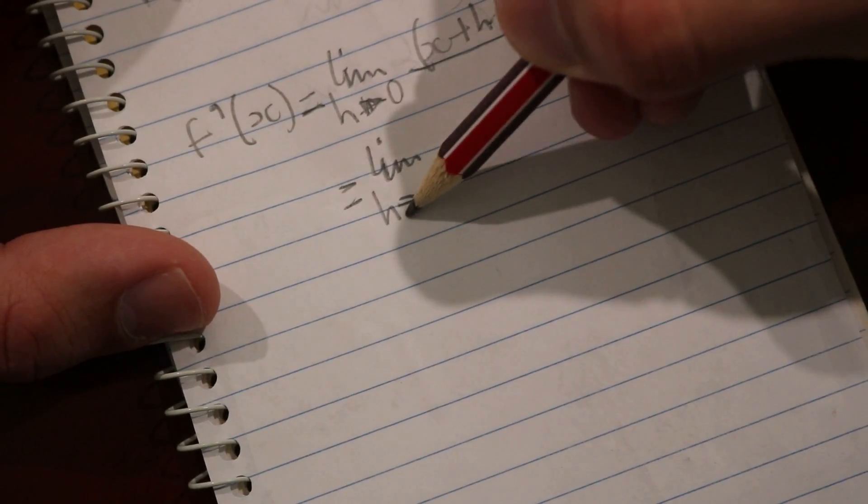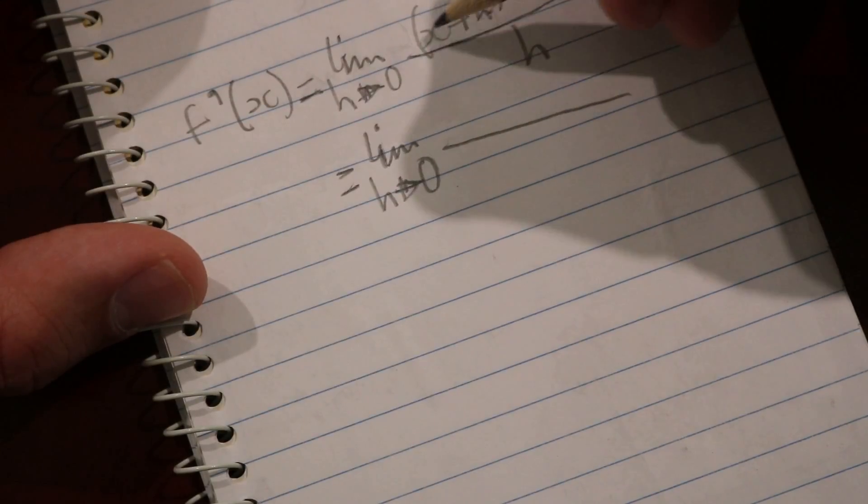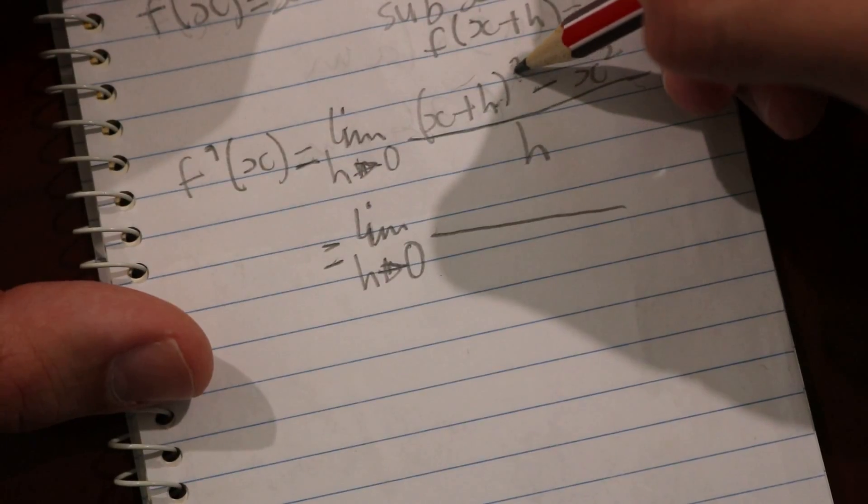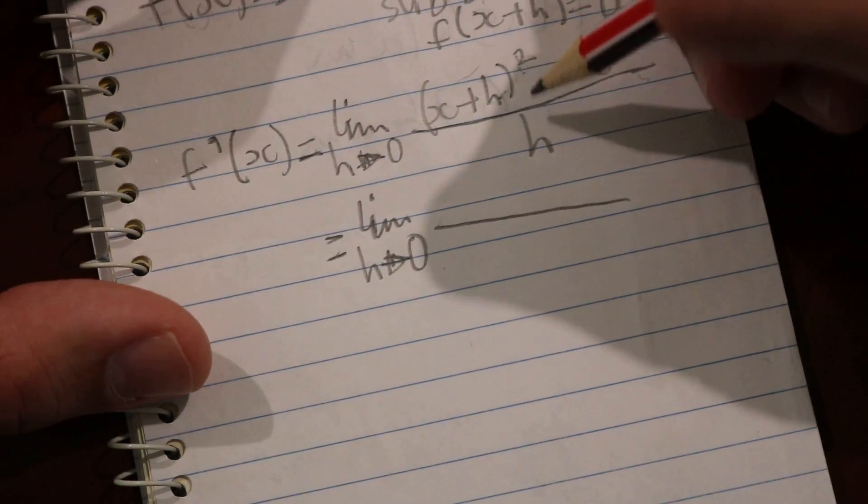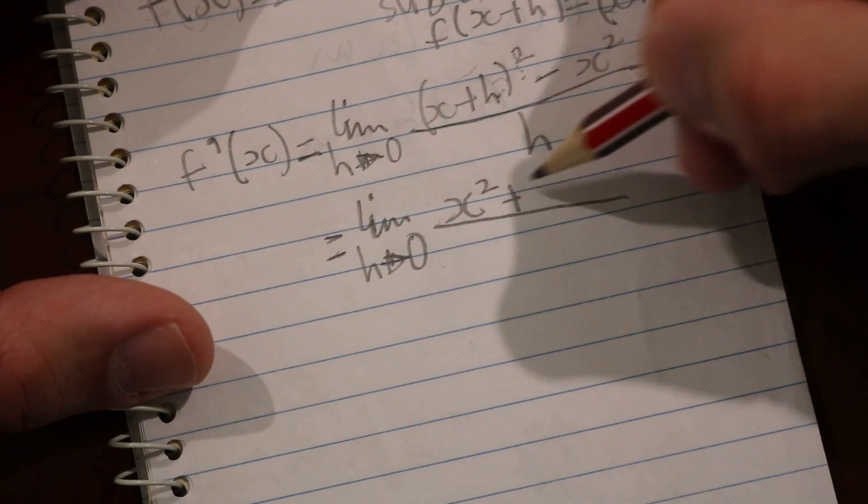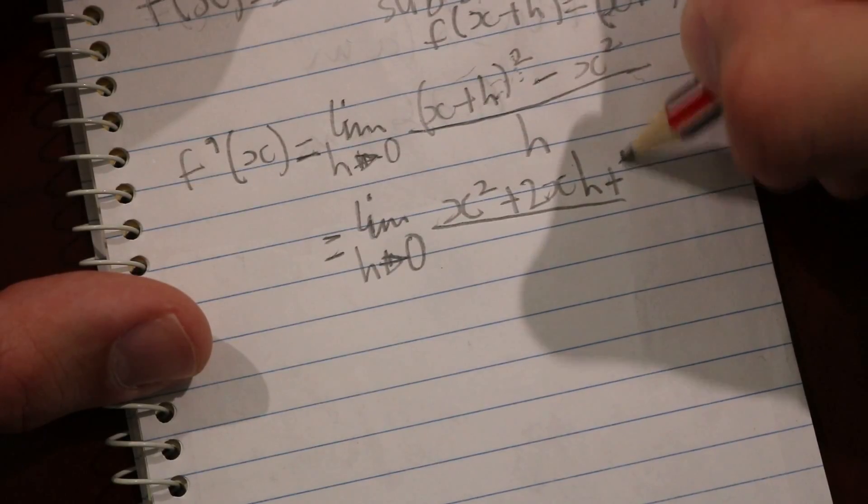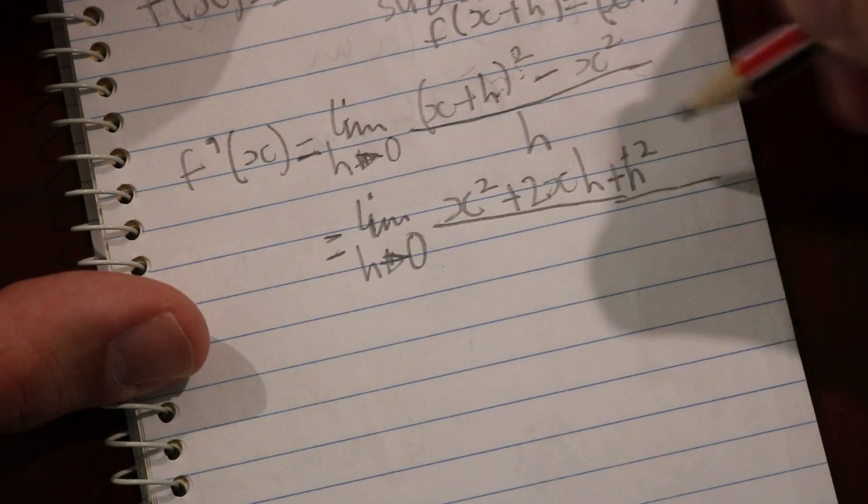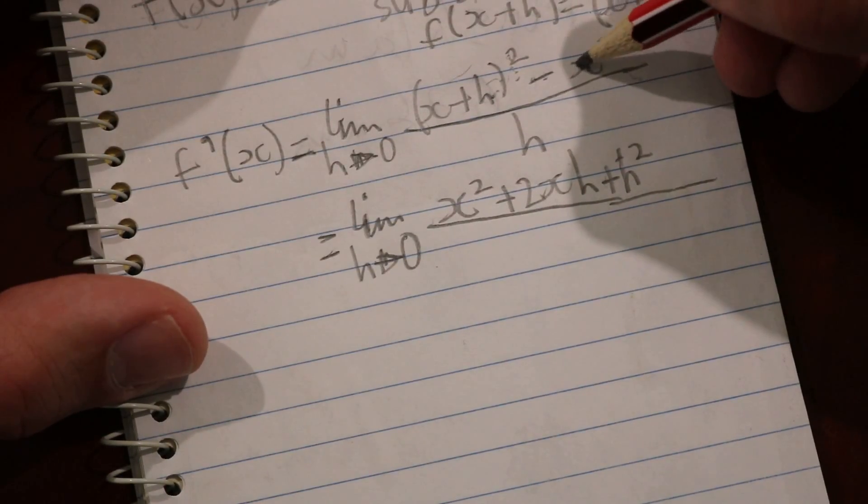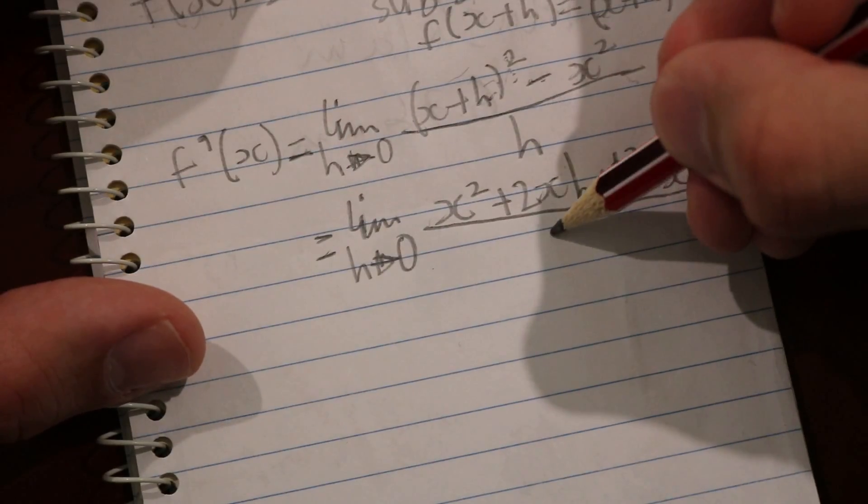The limit as h approaches 0 again. Expanding the bracket gives us x² + 2xh + h². Then we put the last term on, which is -x² over h.